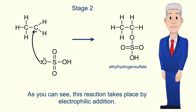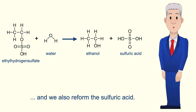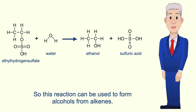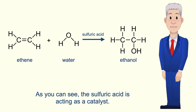So as you can see, this reaction takes place by electrophilic addition. Now, if we add water to ethyl hydrogen sulfate, we make the alcohol ethanol, and we also reform the sulphuric acid. So this reaction can be used to form alcohols from alkenes. I'm showing you the overall equation for this reaction here, and as you can see, the sulfuric acid is acting as a catalyst.